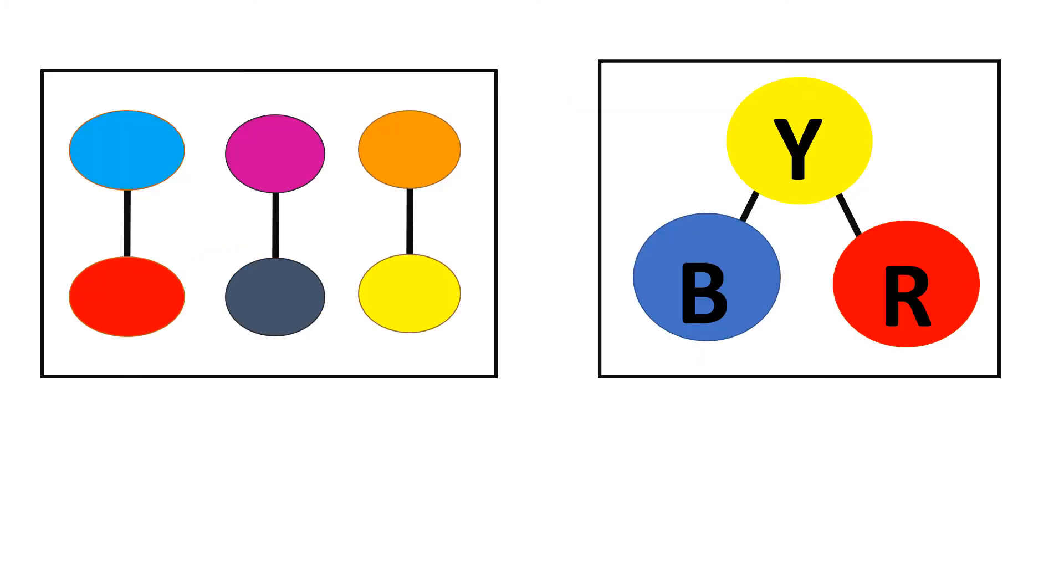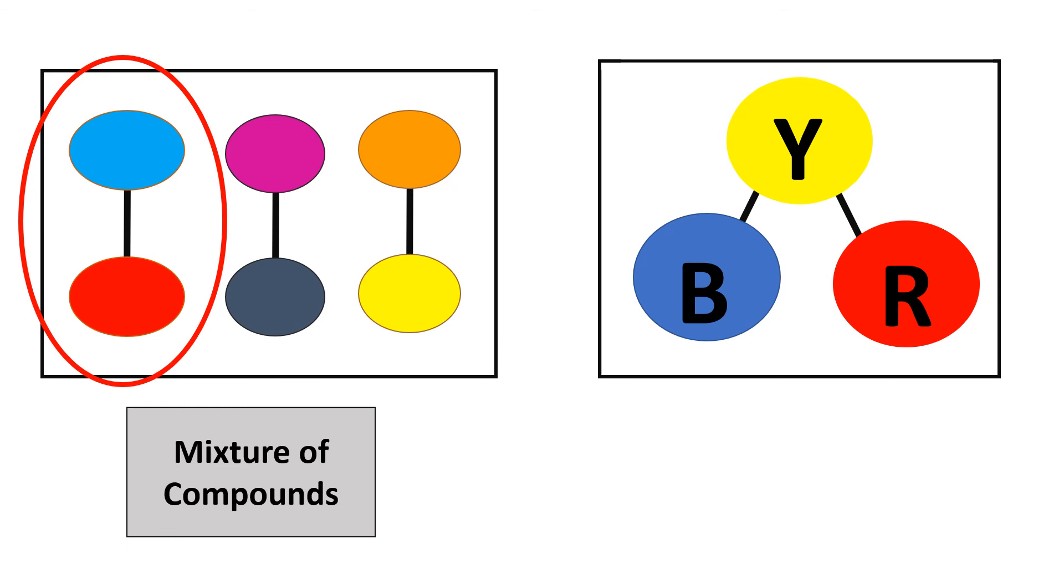Next, these two boxes contain compounds. But the first box is called mixture of compounds. Because as you can see, this box has three compounds. The first one, the second one, and the third one.